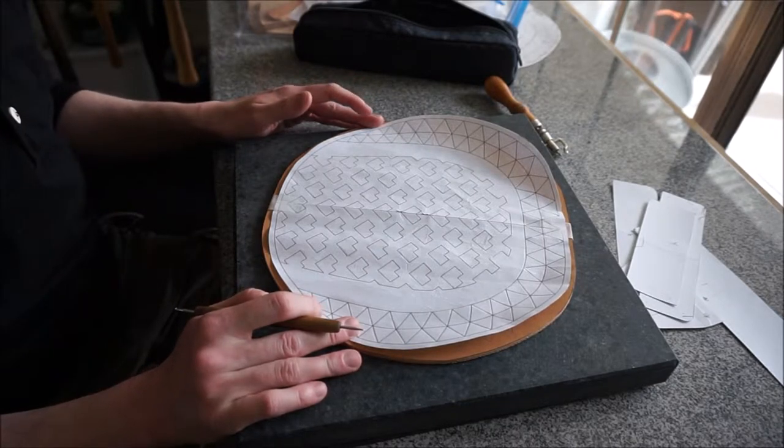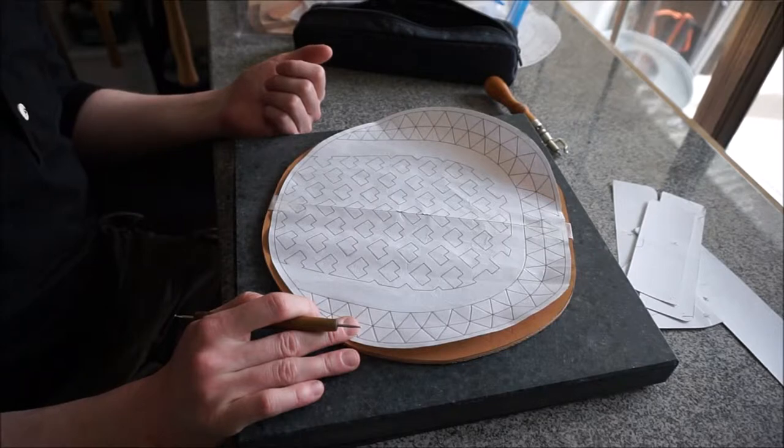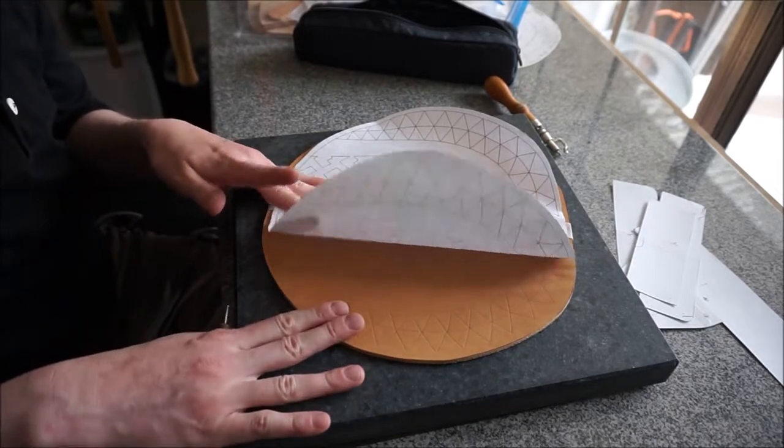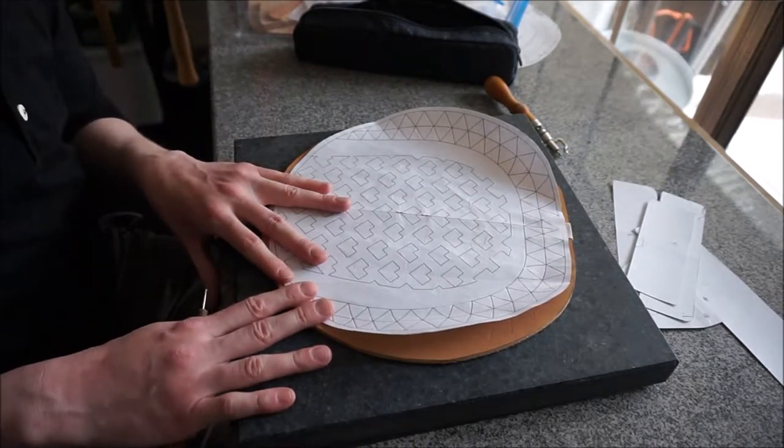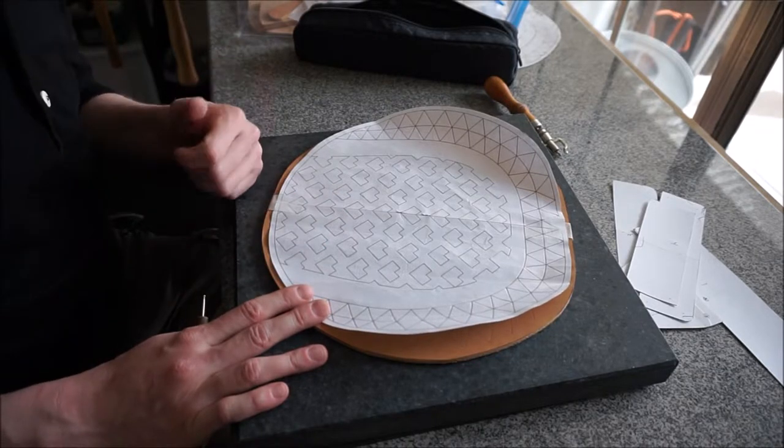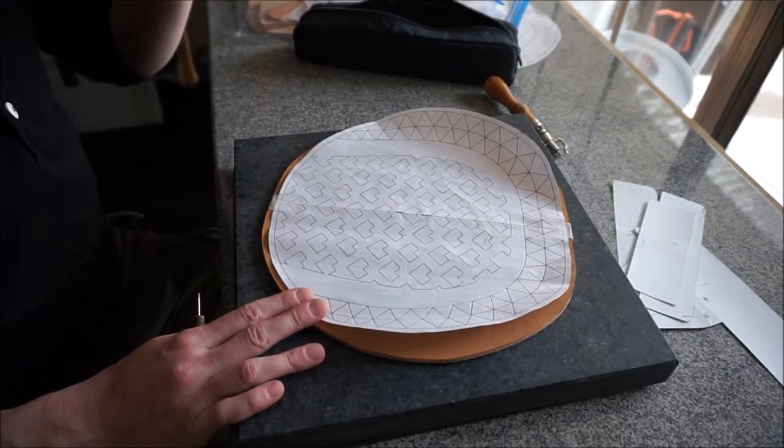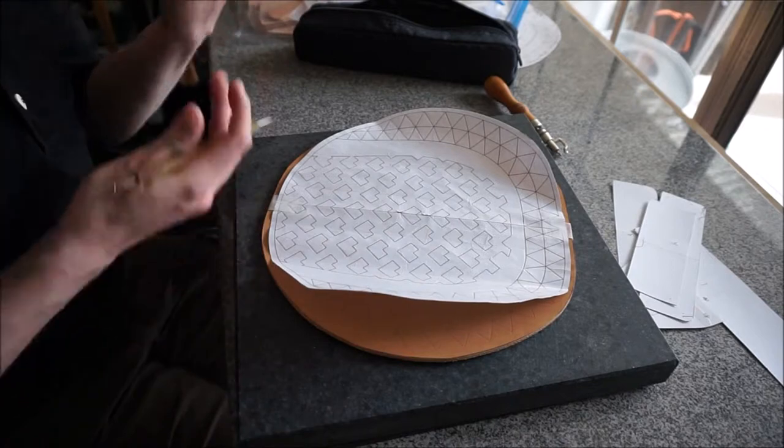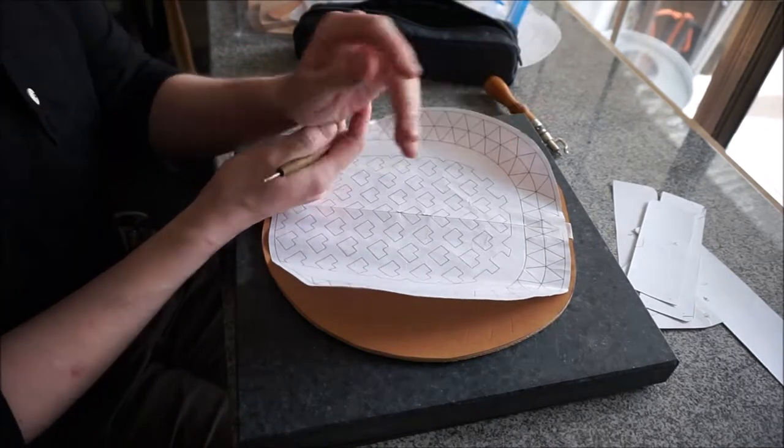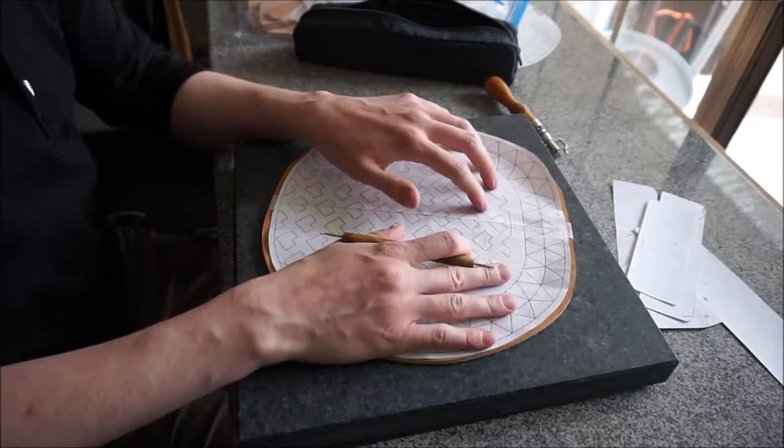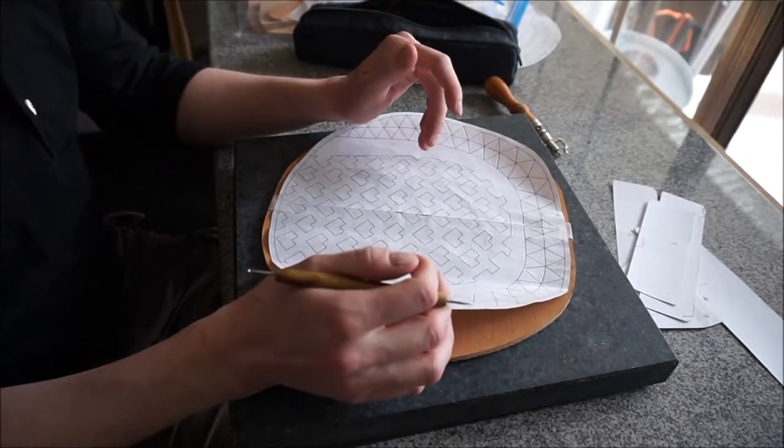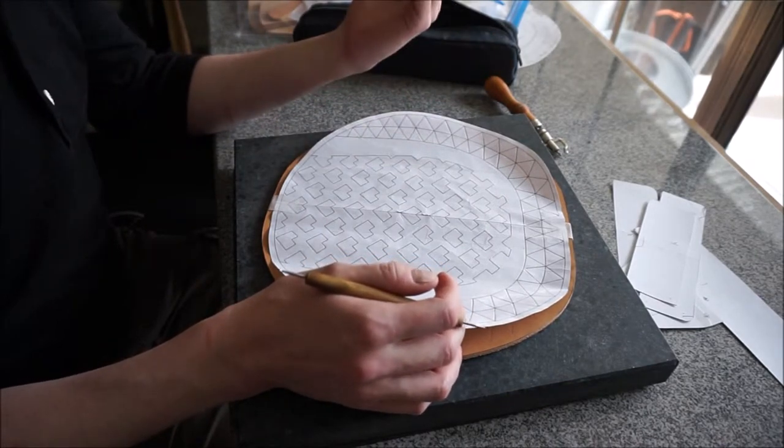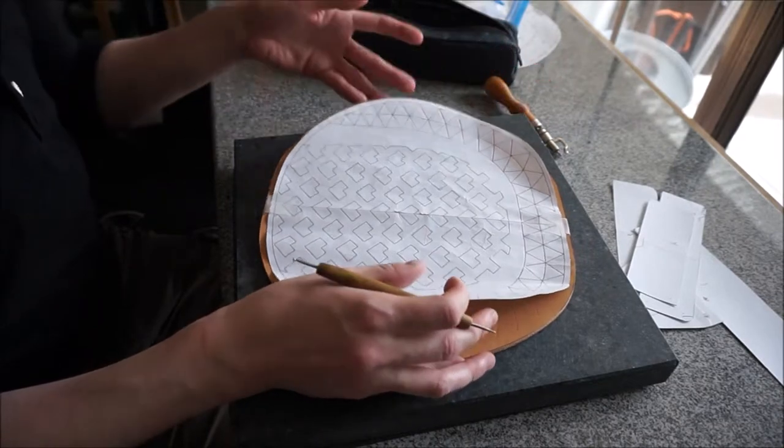Wet leather picks up indentations and once it does, there's no way to buff them out really. You can use the backside of a spoon to kind of press the surrounding area down so that it's less obvious, but generally your best option is just to not leave marks on the wet leather. If you're wearing rings, jewelry, watches, cuffs that have buttons on them that are likely to press down into the leather when you're working on it, you're going to want to take those off and just use your bare hands.